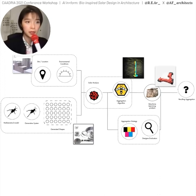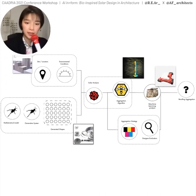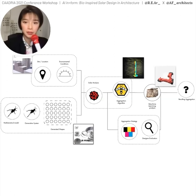On screen you can see the actual pipeline split into different regions. The first is to identify socioeconomic context and gather solar data. The second is to synthesize between mathematical models, bio-inspired and generative systems into delivering a preliminary form. Both feed into solar analysis using an evolutionary algorithm to optimize via collected solar data. Then machine learning is used to automate this process because of heavy computation. David will introduce in more detail how we position the pipeline.